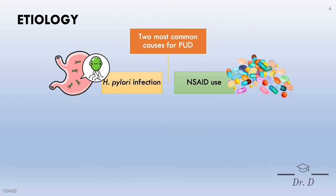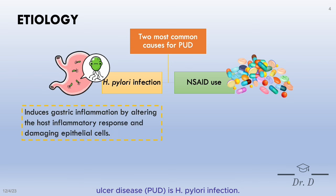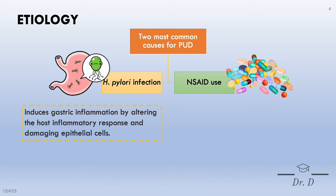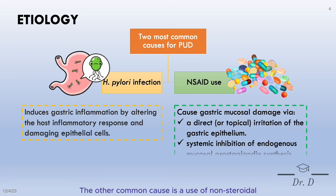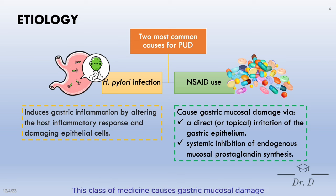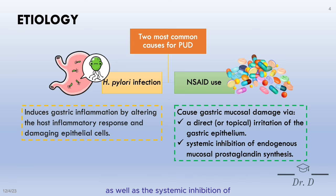One of the two most common causes of peptic ulcer disease is H. pylori infection. This microorganism induces gastric inflammation by altering the host inflammatory response, thereby damaging epithelial cells. The other common cause is the use of non-steroidal anti-inflammatory drugs, which cause gastric mucosal damage via direct irritation of the gastric epithelium as well as systemic inhibition of endogenous mucosal prostaglandin synthesis.